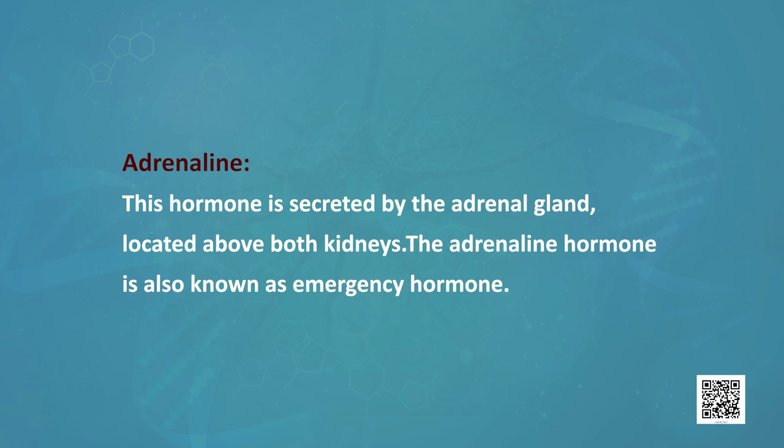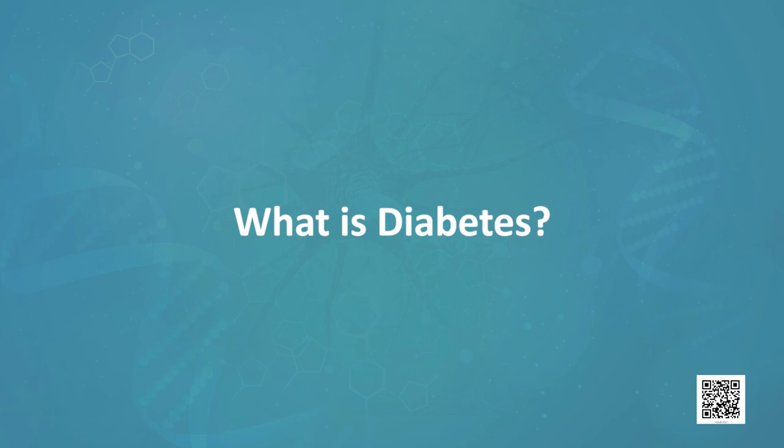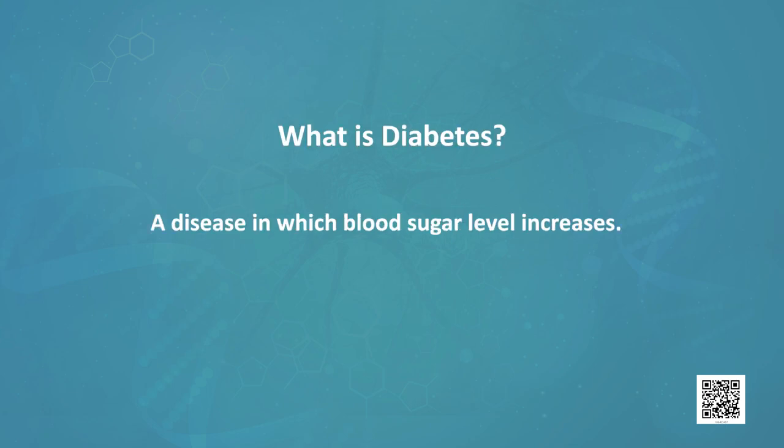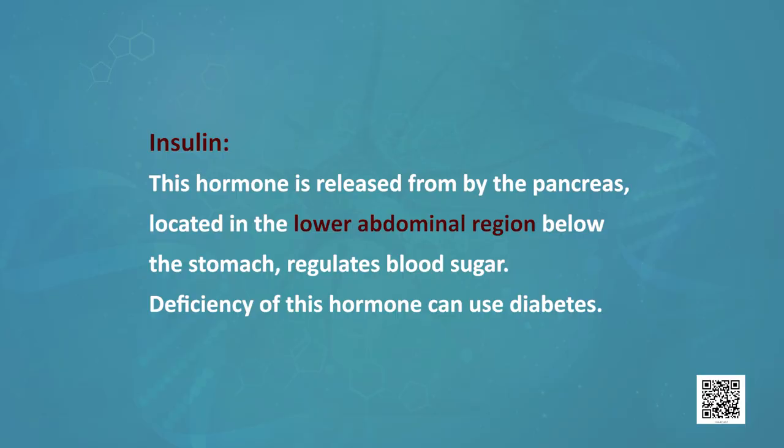Adrenaline is also known as the emergency hormone. Now, insulin — you must have heard about diabetes. Diabetes is a disease caused by high blood sugar levels. The reason is insulin. This hormone is released from the pancreas, which is located in the lower abdominal region below the stomach. Insulin is responsible for regulating blood sugar levels. Deficiency of this hormone can increase blood sugar levels in the body and causes the disease known as diabetes.